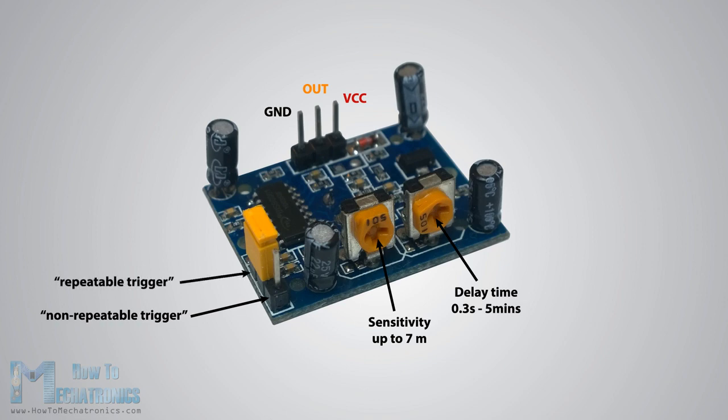The other mode called repeatable trigger will keep the output high all the time until the detected object is present in the sensor's range.